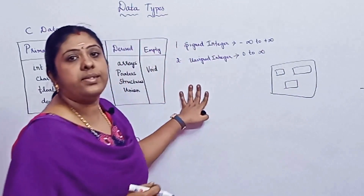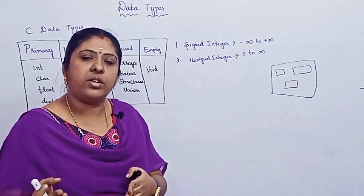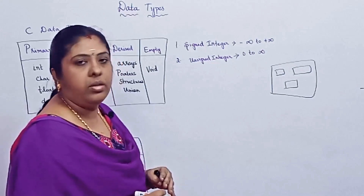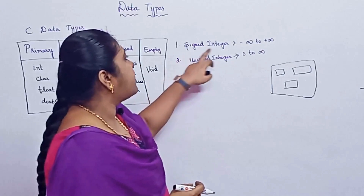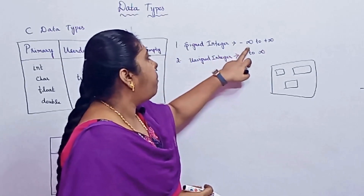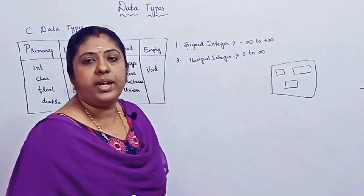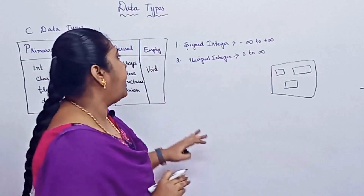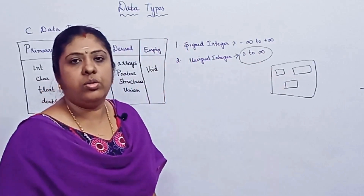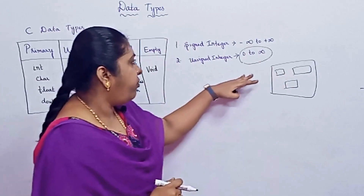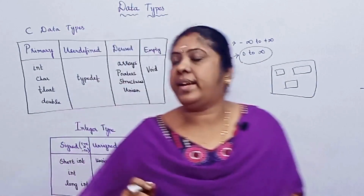An integer is a whole number with no decimal values. The signed integer range goes from minus infinity to plus infinity — it can be both positive or negative. For the unsigned integer, the range starts from zero to infinity, meaning only non-negative values. With this concept we can now define the range of a particular data type.